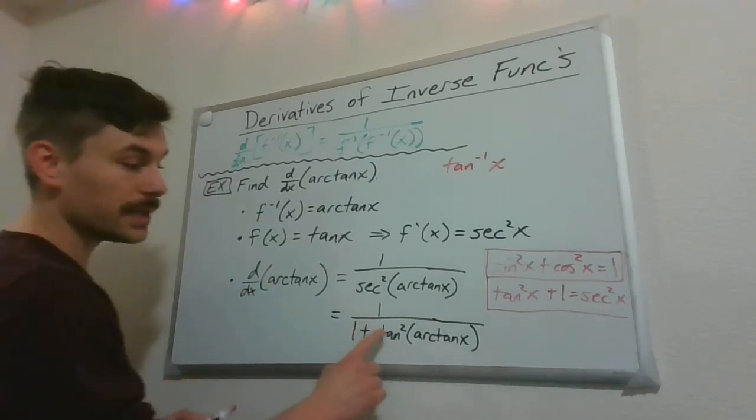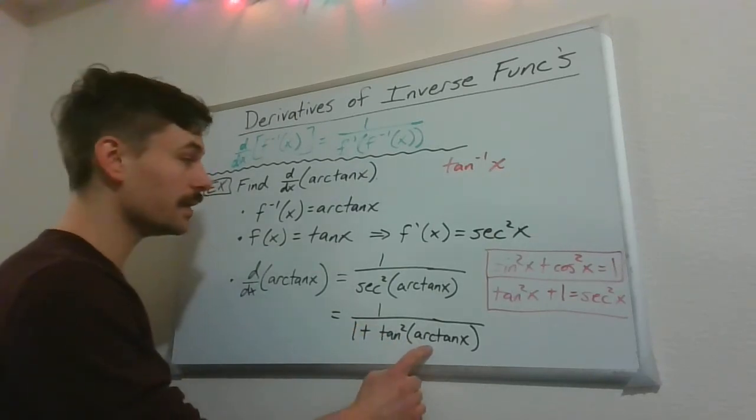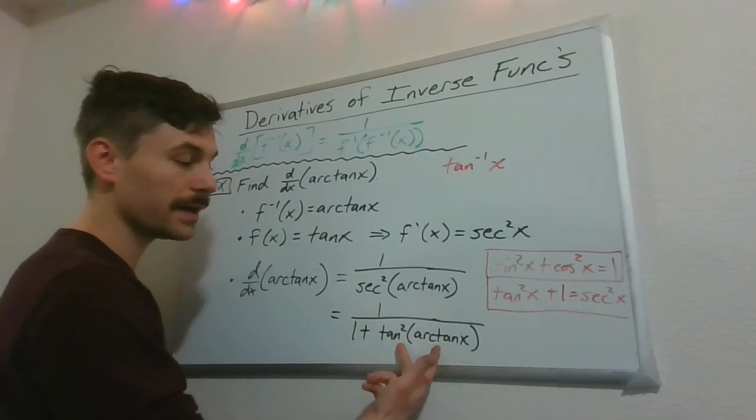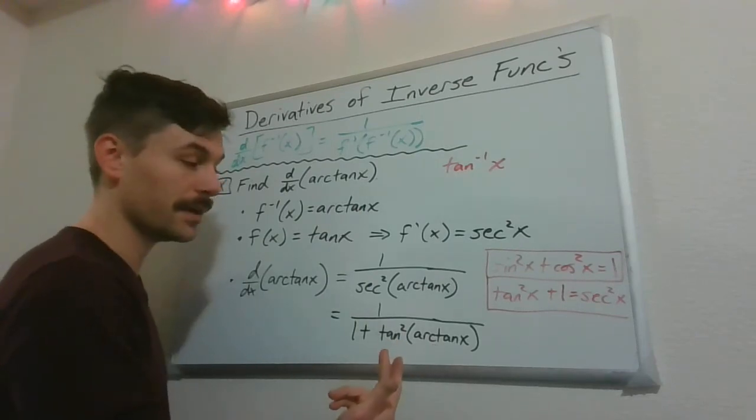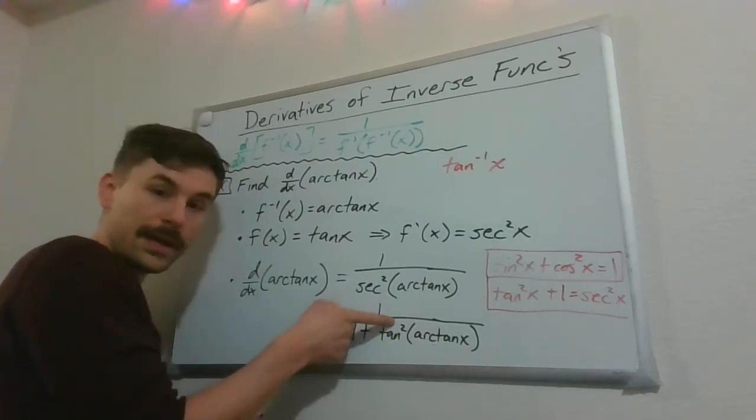But tangent and arctangent, those are inverse functions. So if I compose those, I just get x out of there. And I have this little square.